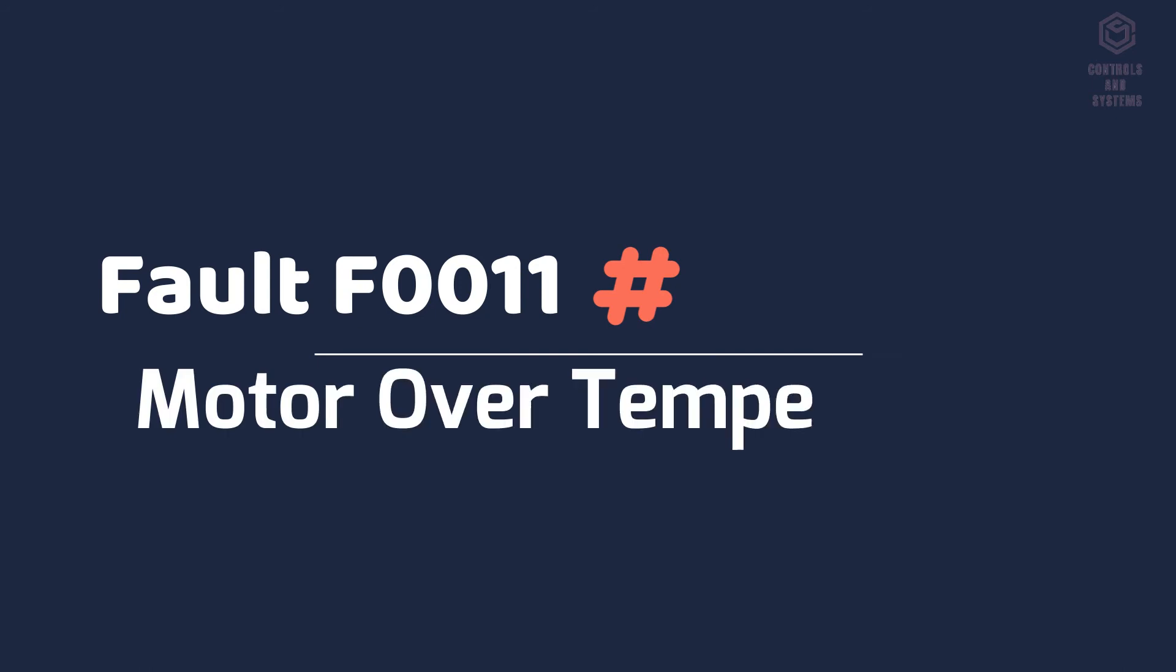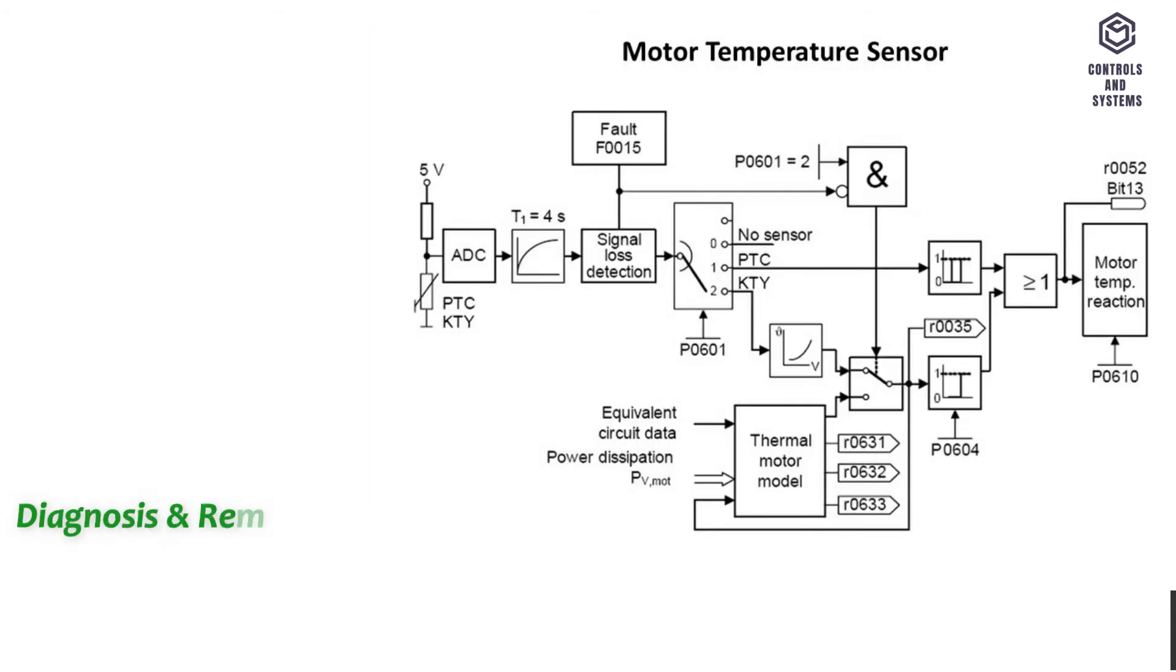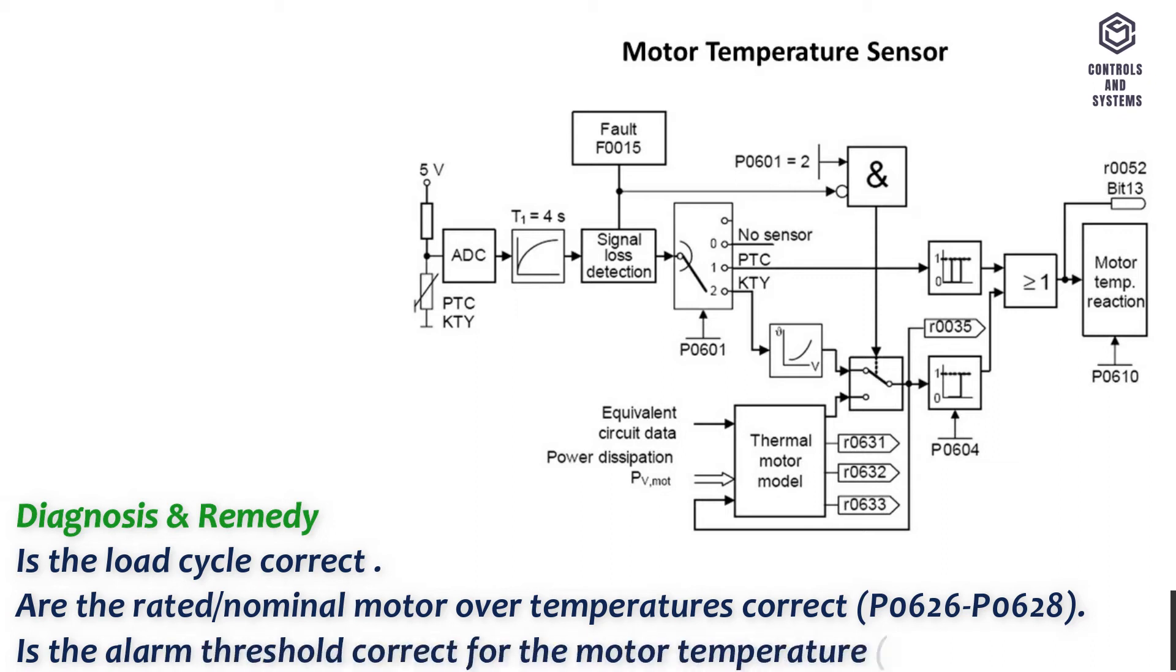Fault F0011 motor over temperature. Quit: Refer to F0001. Cause: Motor overloaded. Diagnosis and remedy: Is the load cycle correct? Are the rated nominal motor over temperatures correct, P0626, P0628? Is the alarm threshold correct for the motor temperature P0604?